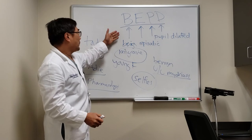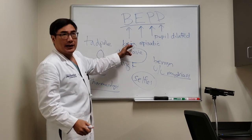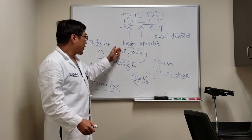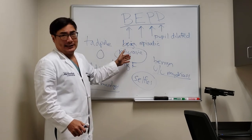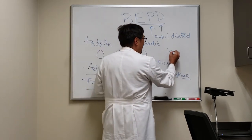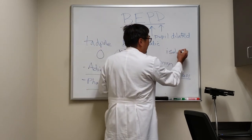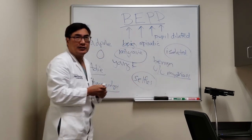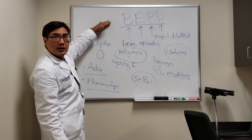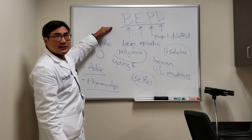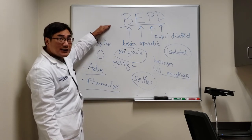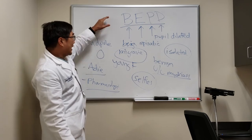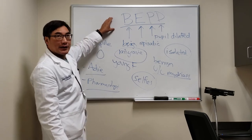I think most patients just want reassurance that it's benign. The one caveat, however, is that it has to be isolated — meaning there can't be any other finding. Don't make the diagnosis of BEPD if they have ptosis or any motility deficit, as that would suggest third nerve palsy or Horner syndrome. You don't want to make the mistake of saying it's benign when it's not.